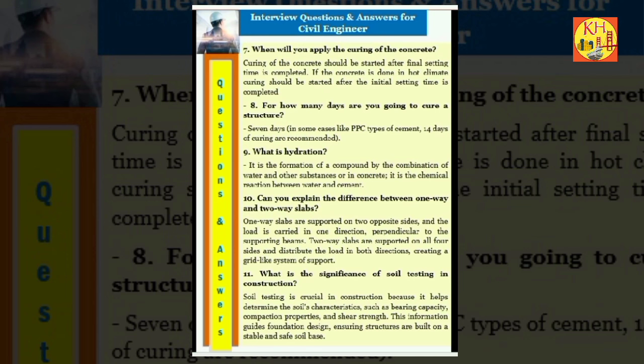Question 7: When will you apply the curing of the concrete? After the concrete has initially set. 35 to 40 minutes is the initial setting time of concrete. Question 8: For how many days are you going to cure a structure? 7 days. In some cases like PPC types of cement, 14 days of curing are recommended. Question 9: What is hydration? It is the formation of a compound by the combination of water and other substances or in concrete, it is the chemical reaction between water and cement.